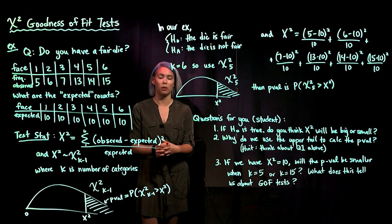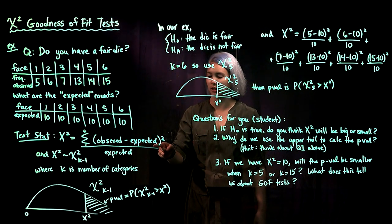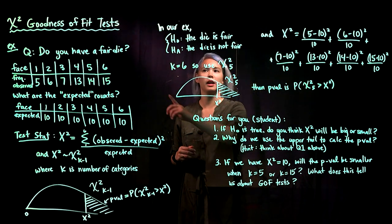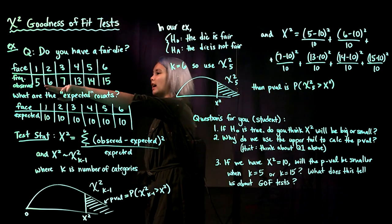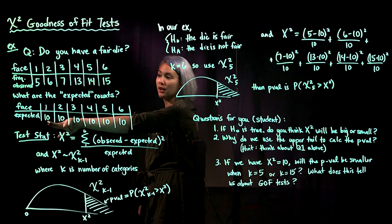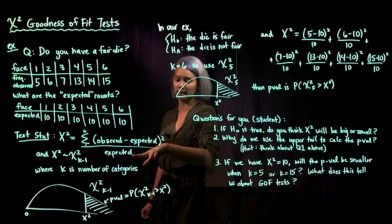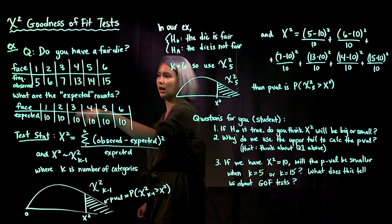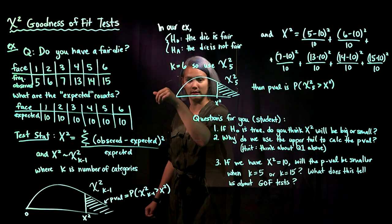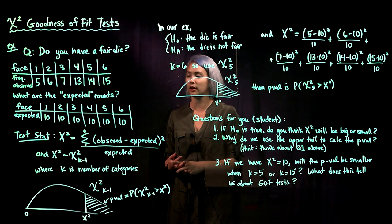We have the observed face counts and the expected counts. Our test statistic is: take the observed counts minus the expected counts, square that, divide by the expected counts, and add them all up. In our die example, for face one we observed five but expected ten, so the component is (5 - 10)² / 10. We repeat that calculation for each remaining face.